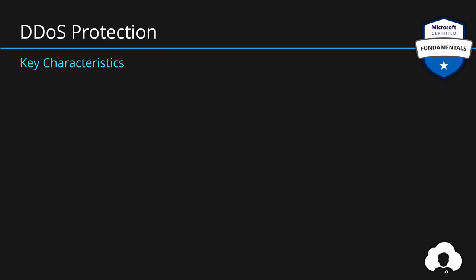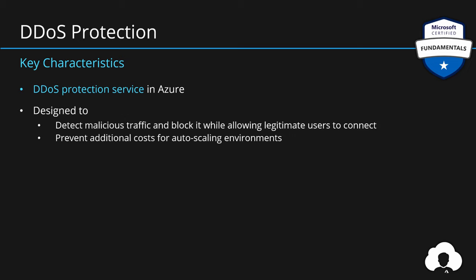To summarize, this service is our distributed denial of service protection from Azure and it was designed to do two things: detect malicious traffic coming from attackers while still allowing legitimate users to connect to our services, but also to prevent customers from paying more if they have auto-scaling environments. If an attacker tries to attack your service with hundreds of servers, all of that traffic might cause auto-scaling features to create new servers, and you will pay more.